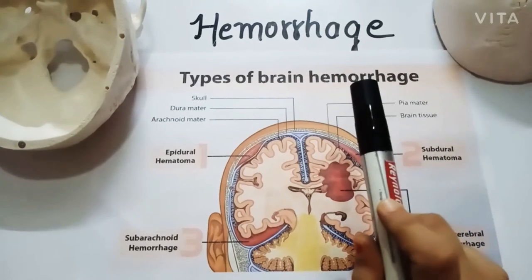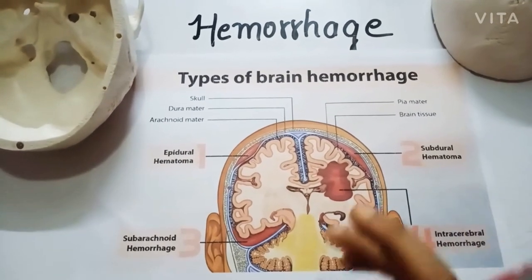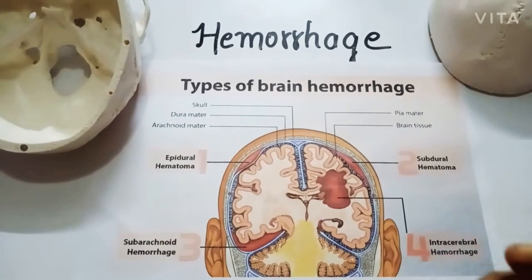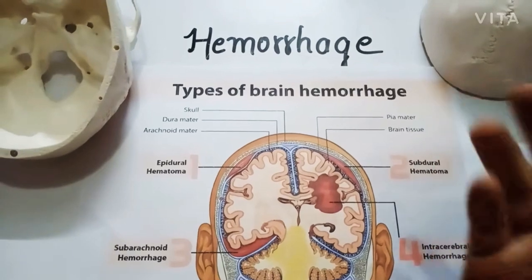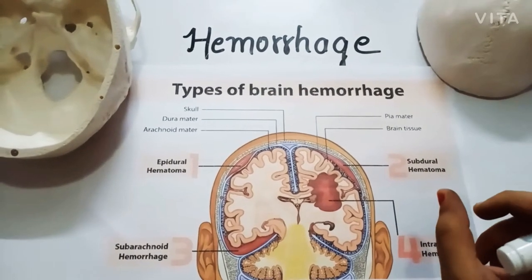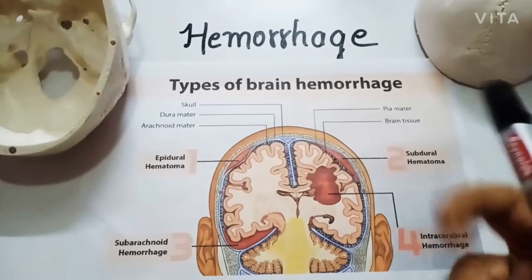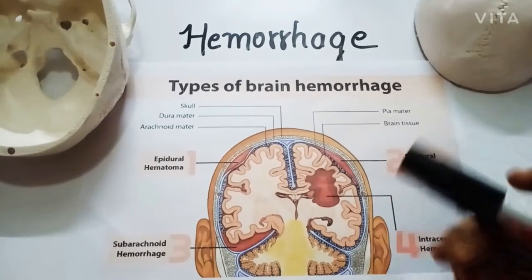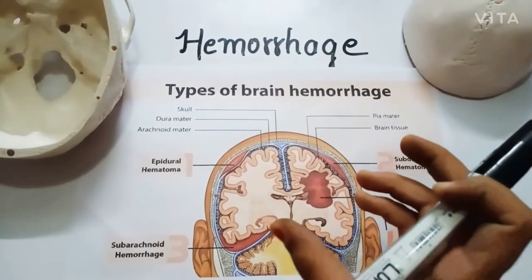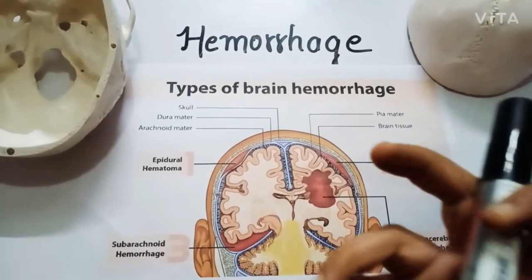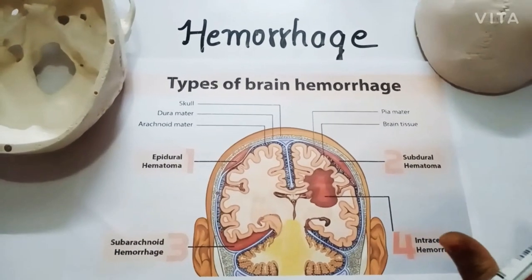Hemorrhage refers to the event when a blood vessel is ruptured and blood comes out. Hematoma refers to the collection of that blood — when a blood vessel ruptures, the blood collects somewhere and forms a clot, and we call that collected blood a hematoma. Blood can collect anywhere in the body.